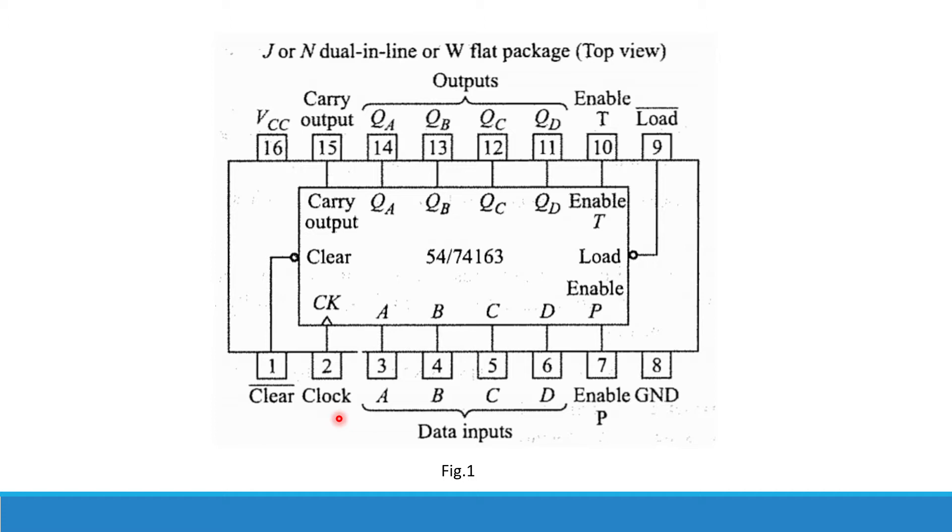The two enable inputs P on pin 7 and T on pin 10 are used to control the counter. If either enable input is low, the counter will cease to advance. Both of these inputs must be high for the counter to count.